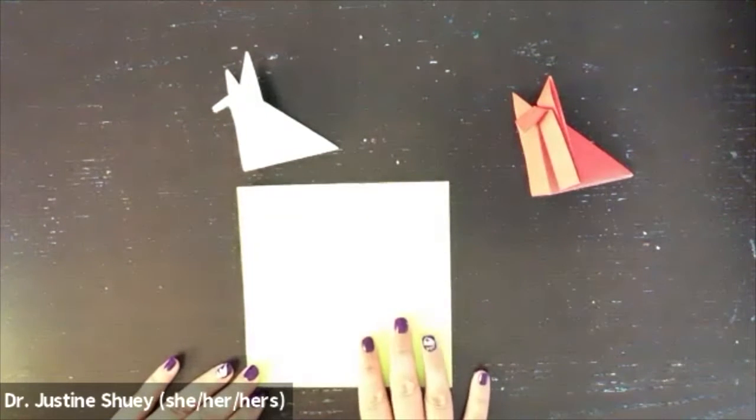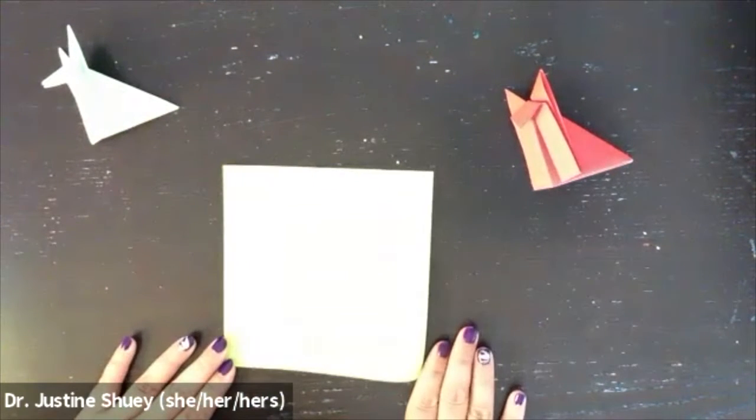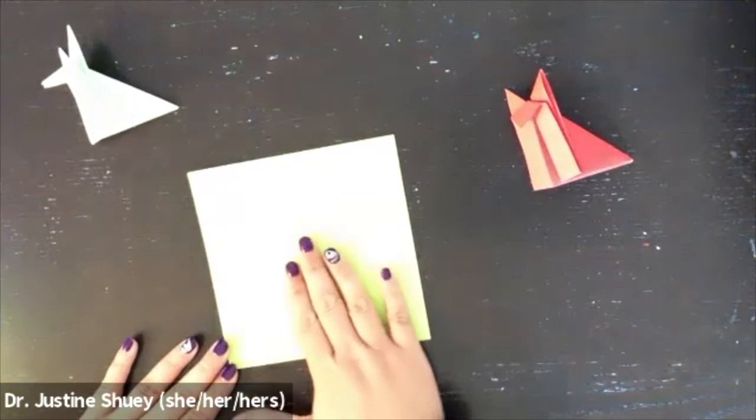We're going to fold our paper in half, corner to corner. It's going to form two triangles.